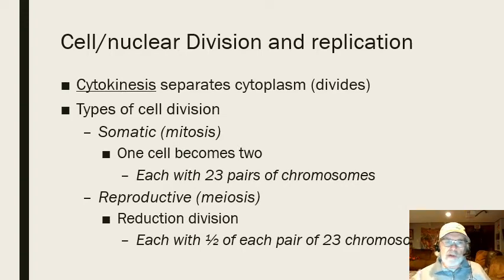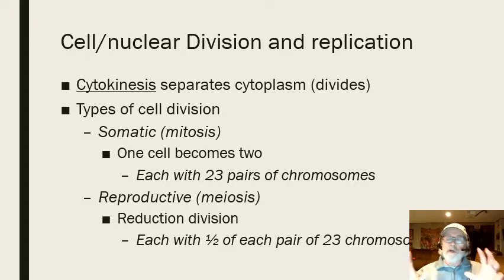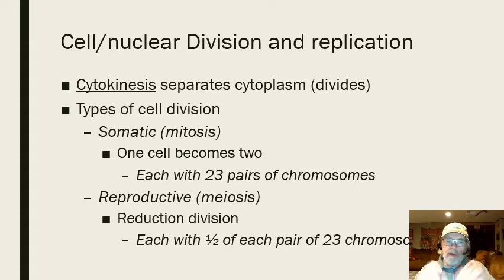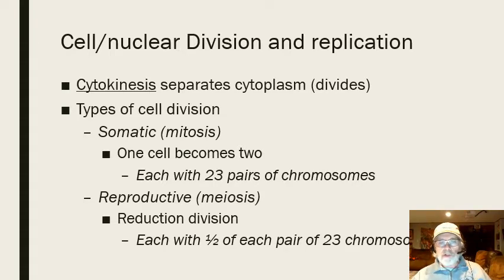There are two types of cell division. The first is called somatic cell division, also called mitosis. This is where one cell becomes two, and each of those two daughter cells has all 23 pairs of chromosomes, identical from one cell to the other. That's called somatic cell division, or mitosis.